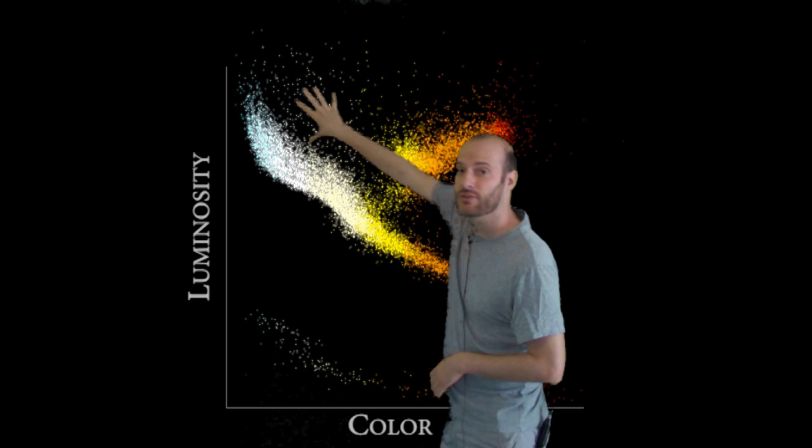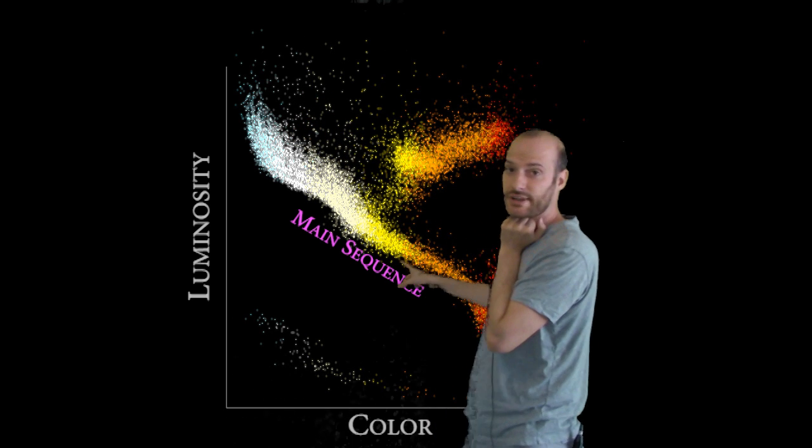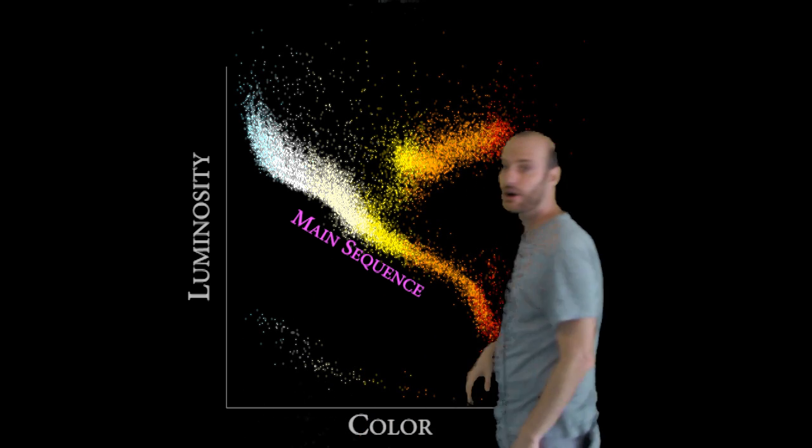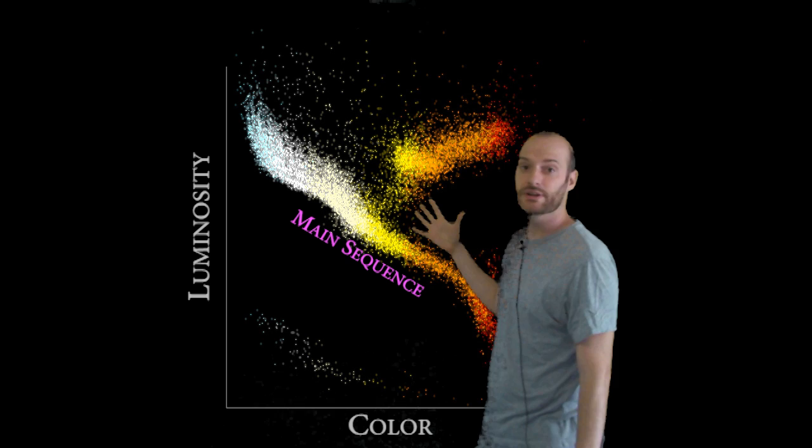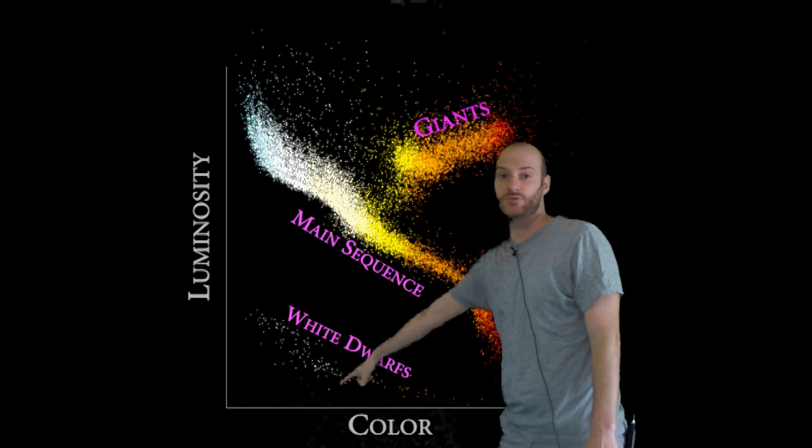Most stars appear along a band called the main sequence. We have bright blue stars here, yellow stars like our sun here, and then red dim stars. Most stars spend their life on the main sequence, then turn into giants, and then ultimately end up as white dwarfs.